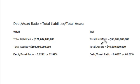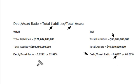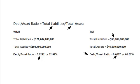We take Target's total liabilities of 30.8 billion and plug it into the formula, dividing by total assets of 46.6 billion. That gives us a debt-to-asset ratio showing that 66 cents of every dollar is funded by debt. This is actually higher than Walmart's 62 or 63 cents, so Target (TGT) actually has a higher ratio of debt to assets.